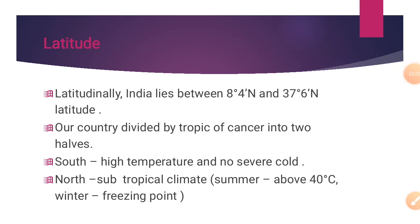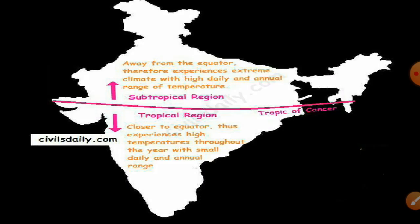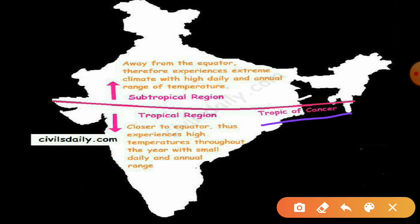Latitudinally, India lies between 8 degrees 4 minutes north and 37 degrees 6 minutes north latitude. We already learnt in the last lesson that the Tropic of Cancer divides our country into two halves. Based on this Tropic of Cancer, our country is divided into a subtropical region in the north and a tropical region in the south. See this picture — the northern part is called the subtropical region and the southern part is called the tropical region.